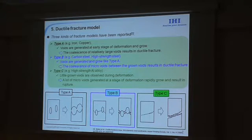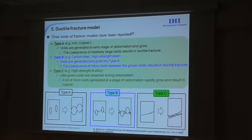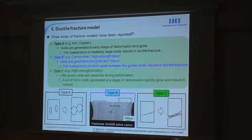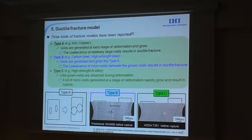I'll show you the ductile crack fracture models. Three kinds of fracture models have been reported. Type A, such as iron and copper, is a model where voids generated at early stages of deformation grow, and coalescence of relatively large voids results in crack and fracture. Type B is a model where voids grow similarly to Type A, and then coalescence of microvoids between the large grown voids results in cracks and rupture — this includes the steels used in this study. Type C is the model where little grown voids are observed during deformation, and many microvoids generated at an early stage rapidly grow, as shown by the aluminum alloy used in this study.